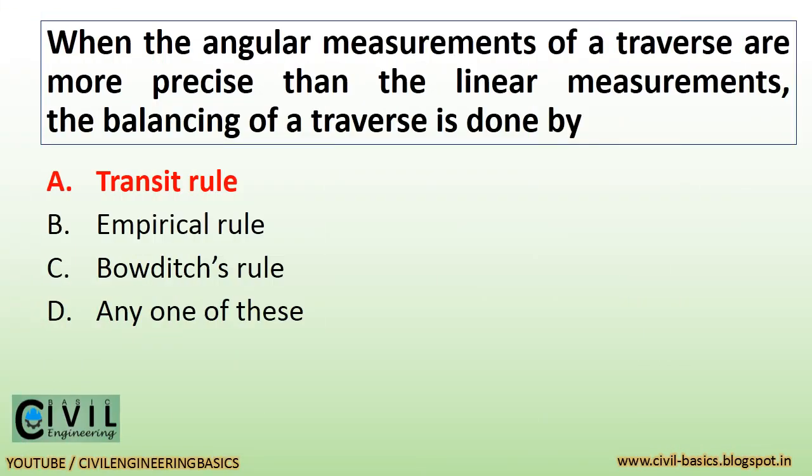When the angular measurements of a traverse are more precise than the linear measurements, the balancing of a traverse is done by transit rule.